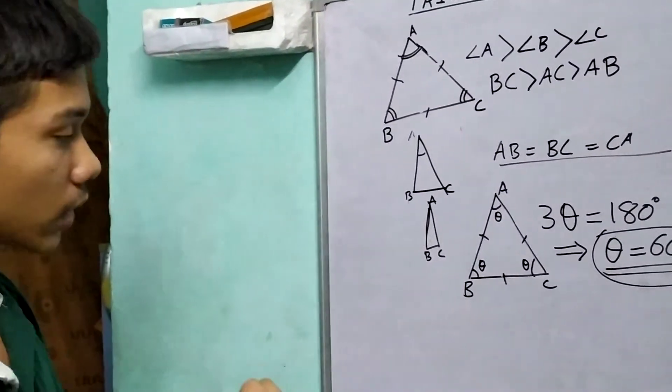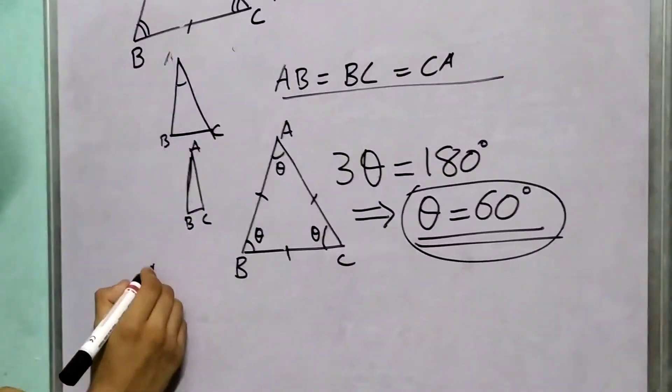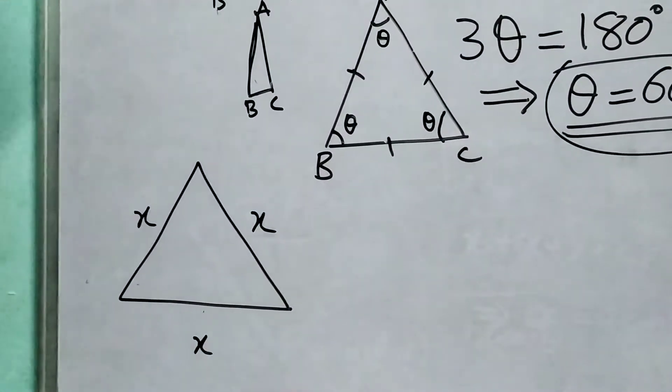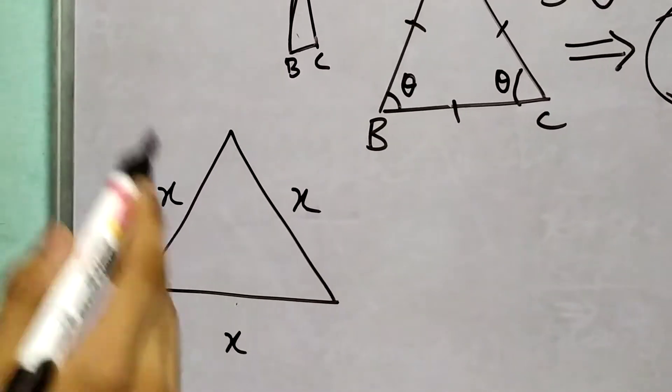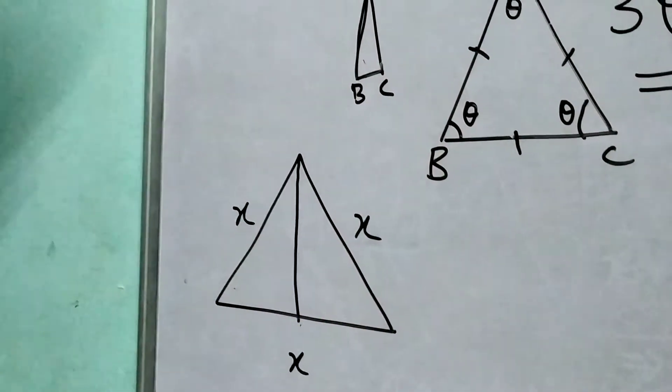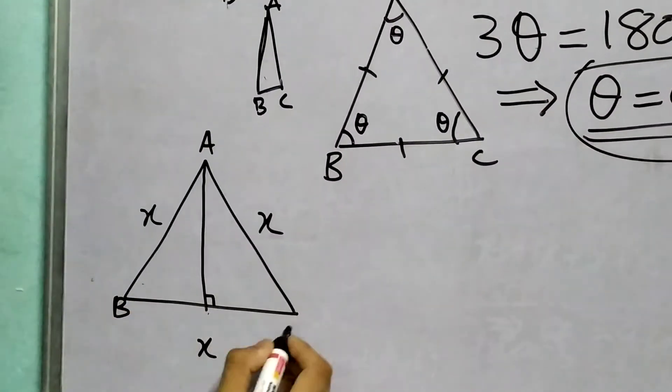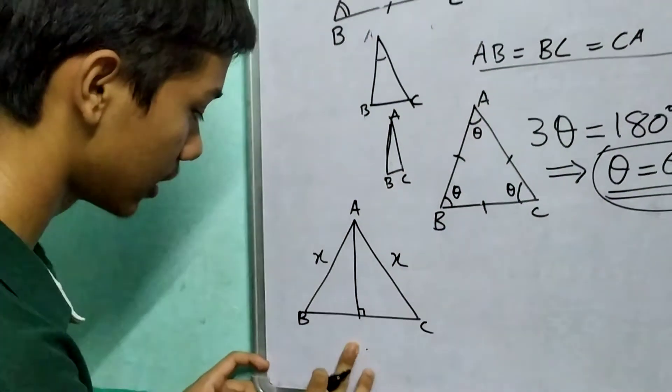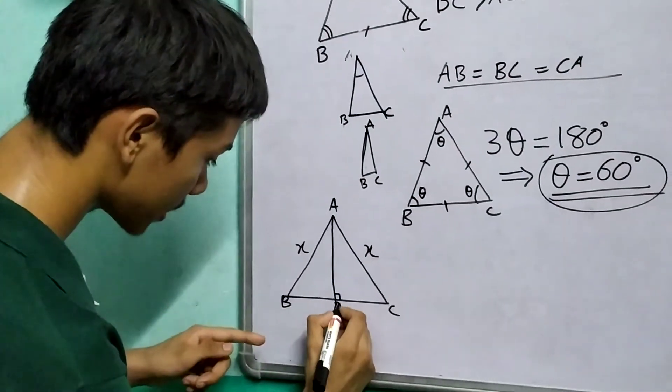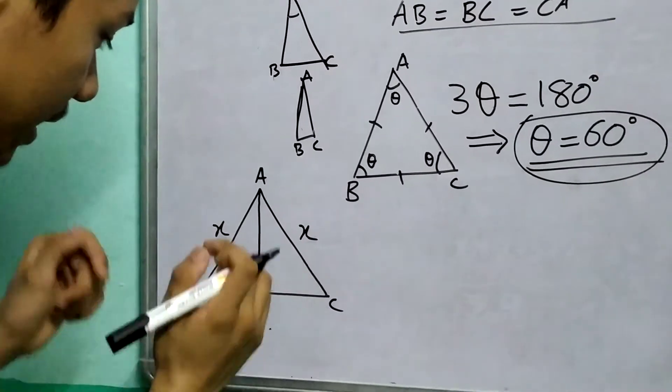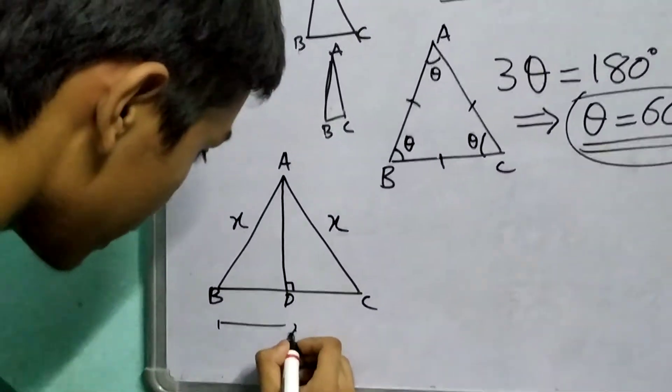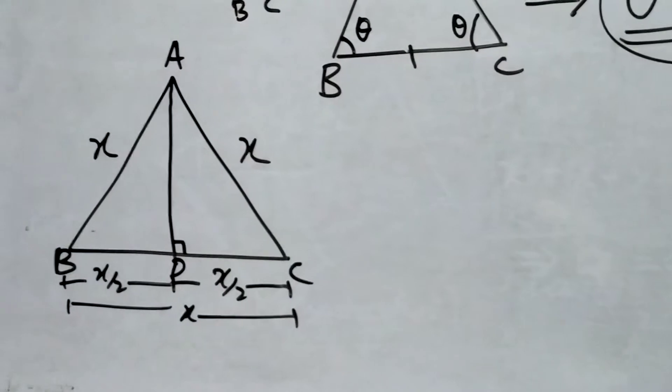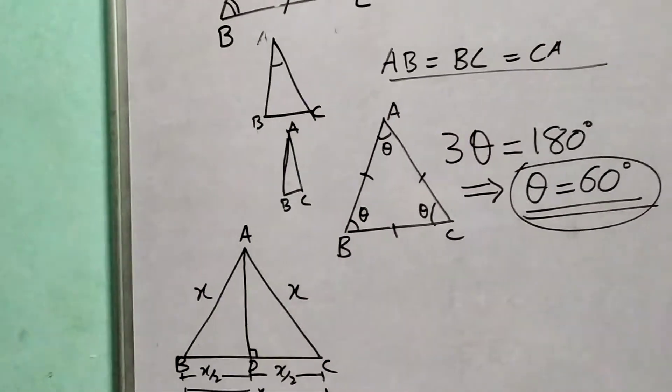We're done talking about angles of an equilateral triangle; let's talk about sides. Let us label these as x, x, x because all are equal. If we draw a line perpendicular to the base from angle A, which is perpendicular to the base, it will bisect the third side. So if this is AD, then AD bisects BC. If this is x, this will be x/2 and this will be x/2. You can prove this using congruency, but I'm giving you just a gist of it.